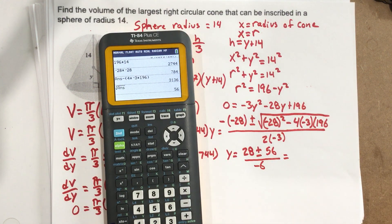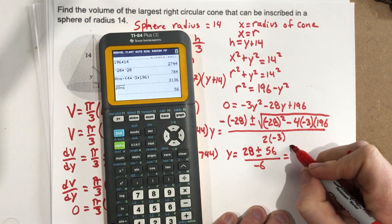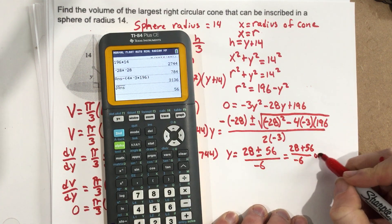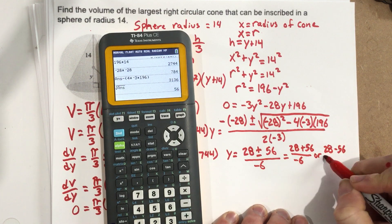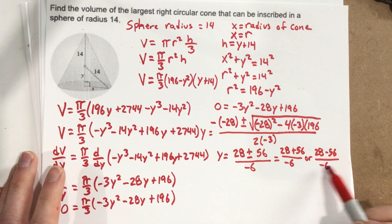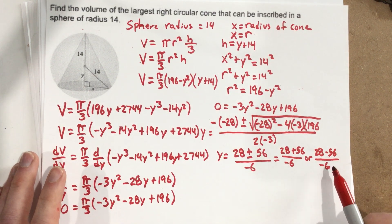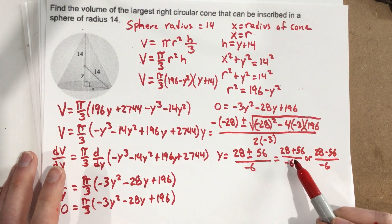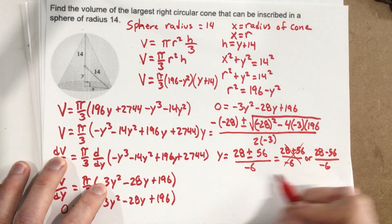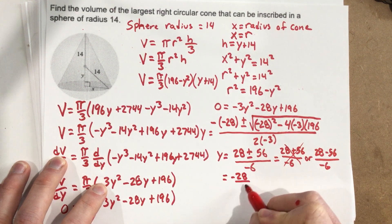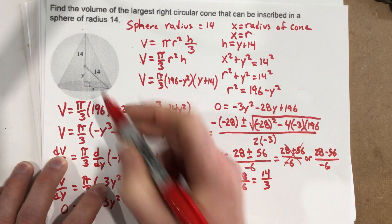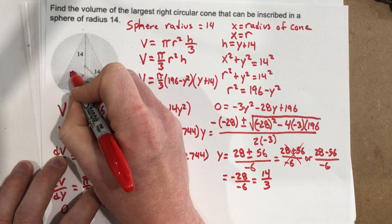This gives two cases: (28 + 56)/(−6) = 84/(−6) = −14, which is a negative distance so we ignore it; and (28 − 56)/(−6) = (−28)/(−6) = 14/3. So y = 14/3. That gives h = y + 14 = 14/3 + 14 = 56/3.